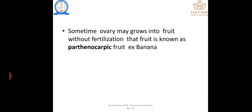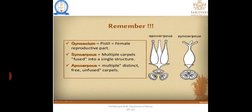Sometimes the ovary may grow into a fruit without fertilization — this is known as a parthenocarpic fruit. We can see there are seedless fruits; these are seedless because no fertilization occurs, so seeds are not formed. Such a fruit is called a parthenocarpic fruit.